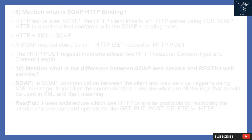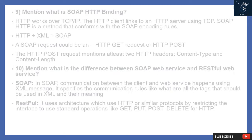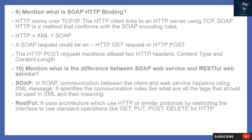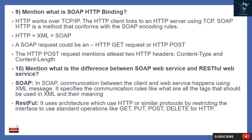Question 9: What is SOAP HTTP binding? HTTP works over TCP/IP. The HTTP client links to an HTTP server using TCP. SOAP HTTP is a method that conforms with the SOAP encoding rules — HTTP plus XML equals SOAP. A SOAP request could be an HTTP GET request or HTTP POST. The HTTP POST request mentions at least two HTTP headers: content-type and content-length.